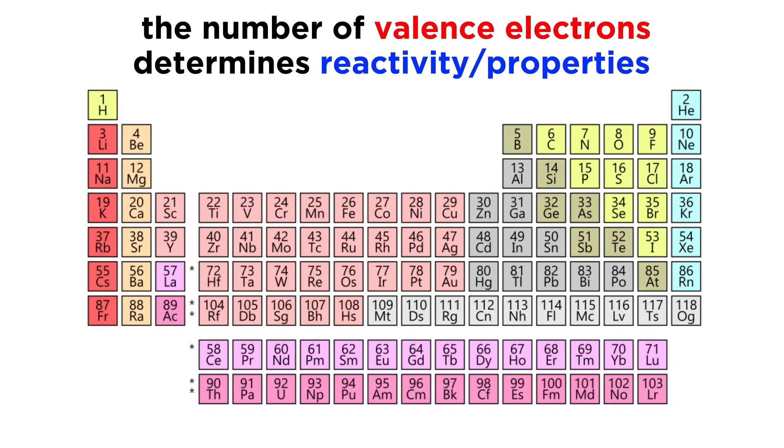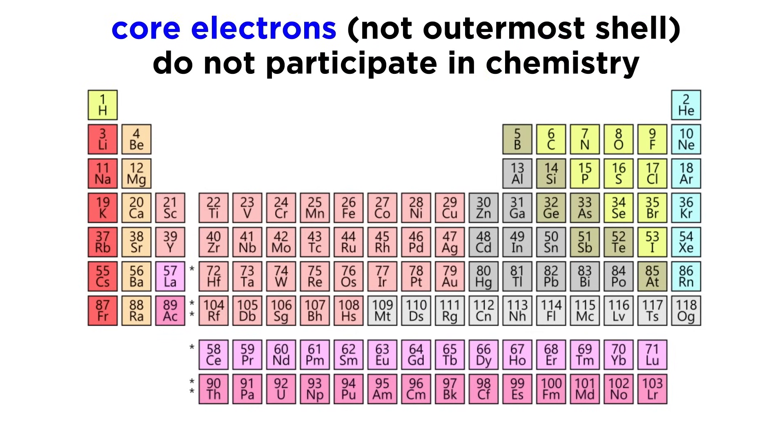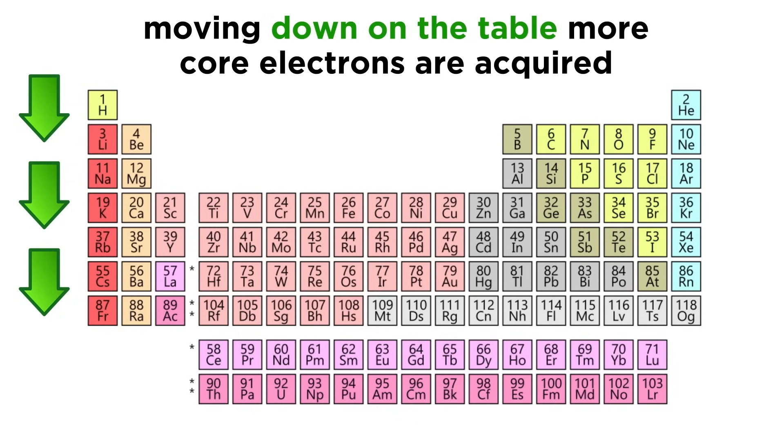So as we move forward and learn about the periodic table, it is the number of valence electrons that will determine the reactivity and properties of any particular element, as the valence electrons are the ones that are available to do chemistry. Those electrons that are not in the outermost shell and are therefore not valence electrons are called core electrons. These are the ones in the inner shells, which do not participate in chemistry. So most elements have many core electrons and just a few valence electrons, particularly as we get lower on the table.